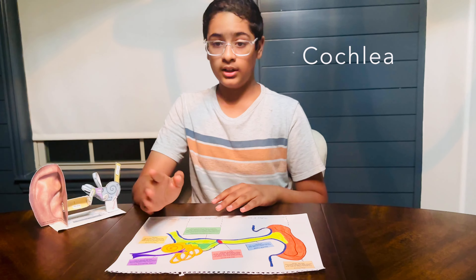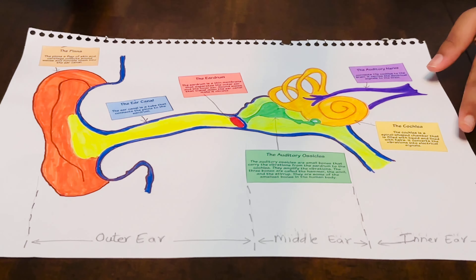To recap: the pinna is the little flap located on the outside. The ear canal is the tube that separates the pinna and the eardrum. The red part in the diagram is the eardrum — a thin membrane that funnels in the vibrations from the sound waves outside.